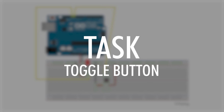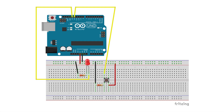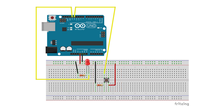Now, task toggle button — the schematic. Create two circuits just like in the last video: one push button and one LED on your breadboard. In series with the LED we will always set a resistance minimum of 220 ohm.